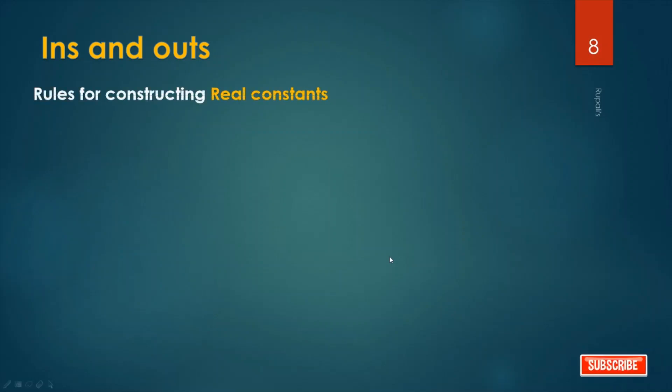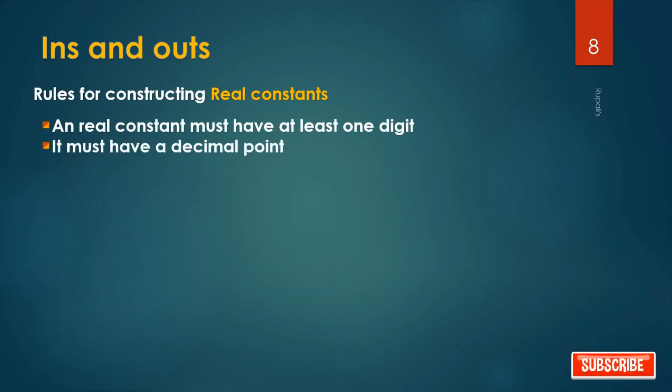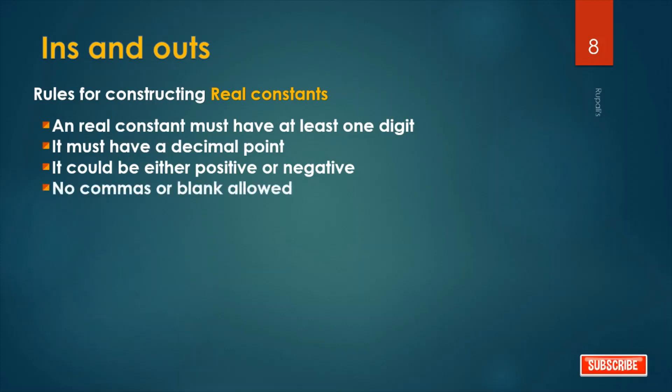Rules for constructing real constant: A real constant must have at least one digit like integer constant. It must have a decimal point because it is a real number. It could be either positive or negative. No commas or blanks allowed. Default sign is positive always. Examples are 426.0, minus 327, 32.70, etc.